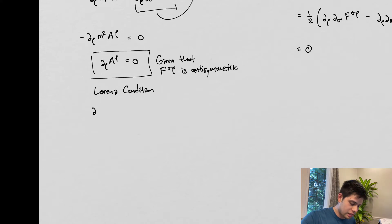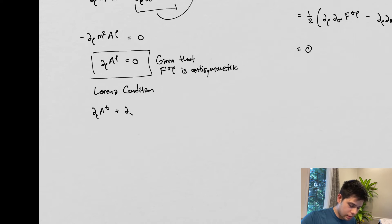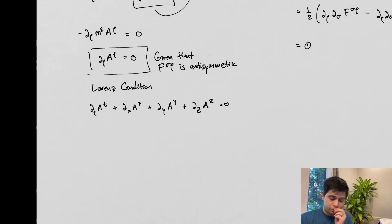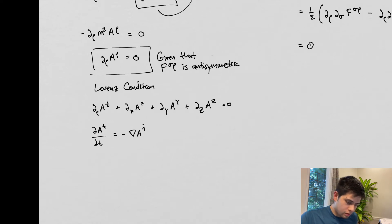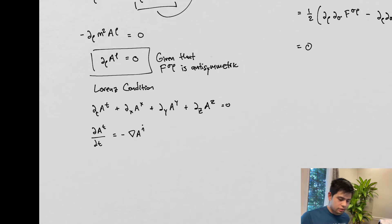Because what this is, is: ∂_t A^t + ∂_x A^x + ∂_y A^y + ∂_z A^z = 0. Sometimes you'll see this written as ∂A^t/∂t = −∇·A_i. And so what does this mean? This is the Lorentz condition — it's another way of writing the Lorentz condition.